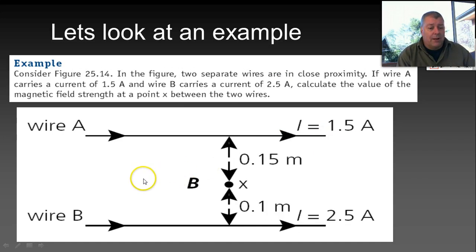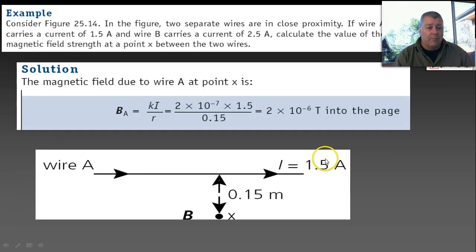Let's look at an example. Fairly complicated one to start with, but if we work our way through it, you should get the idea. Two wires separated by distance. One's carrying 1.5 amps. One's carrying 2.5 amps. We want to know the strength of the magnetic field at point X, which is 15 cm from this one and 10 cm from this one. So, it's a complicated question because the magnetic fields of the two wires will interact, and you'll get the magnetic field at X will be the resultant of the interaction of those two magnetic fields. So, the best way to answer this question is, of course, to divide and conquer.